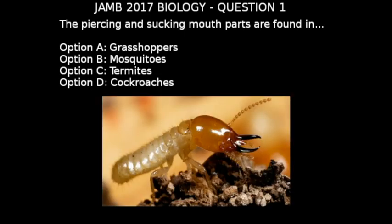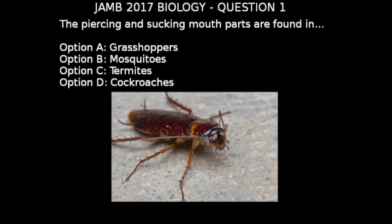Next, option C — termites. Termites mostly feed on dead plant materials in the form of wood, leaves, etc., and therefore they also need mouthparts adapted to biting and chewing these plant materials. So option C is not the correct answer.